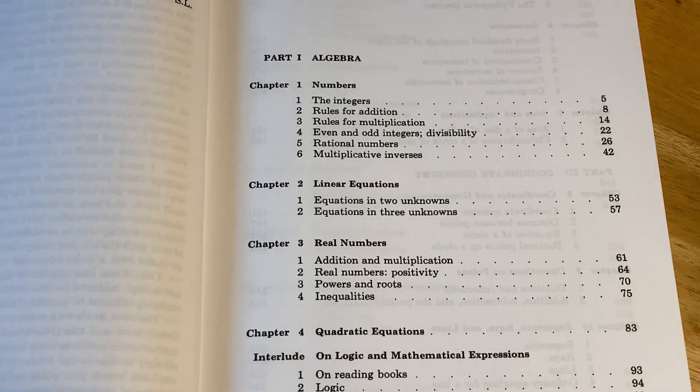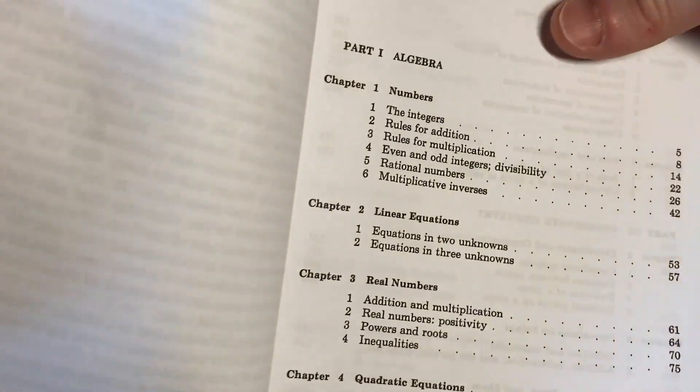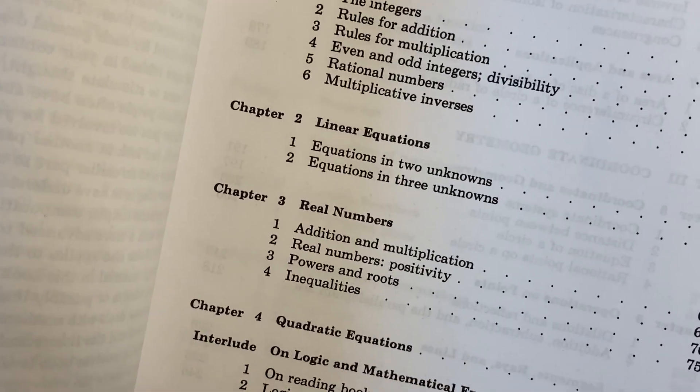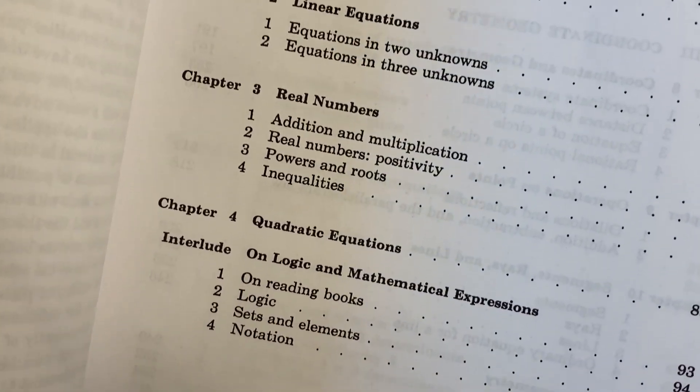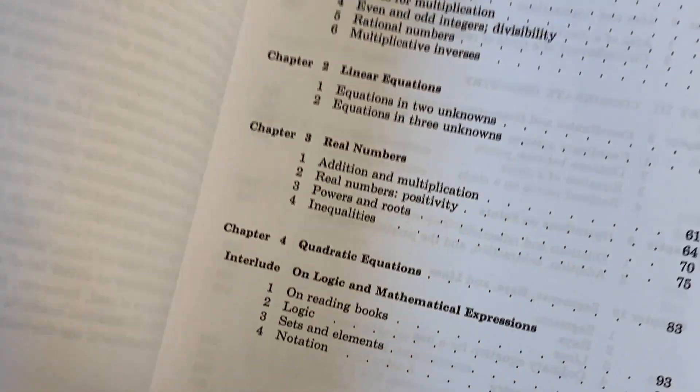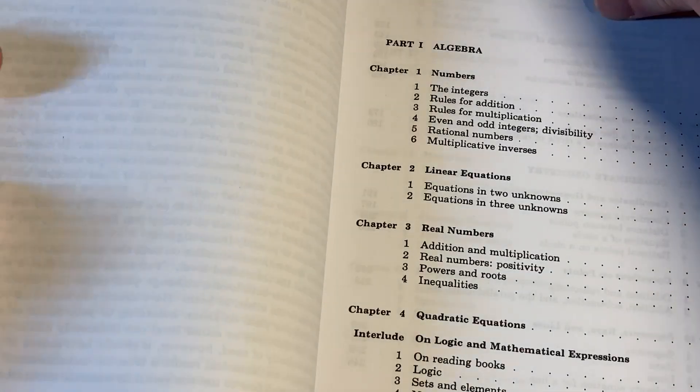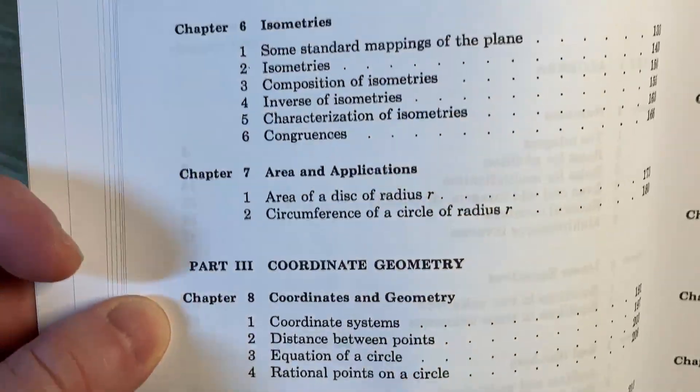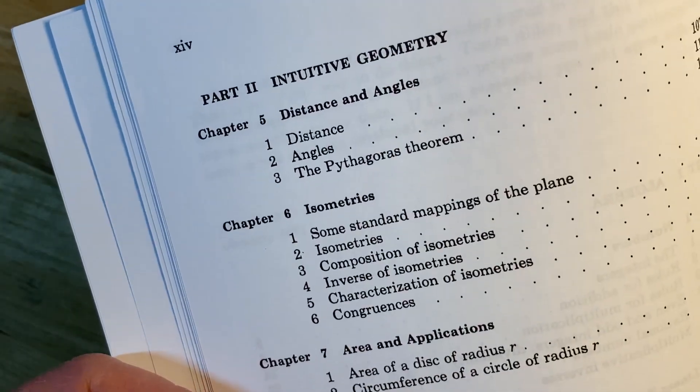Here's a brief look at the content so you can see what you can learn with this book. So it starts with numbers, then linear equations, real numbers, quadratic equations, and then logic. So very different from other math books. In fact, there's no other math book that's like this. This book is very, very different.